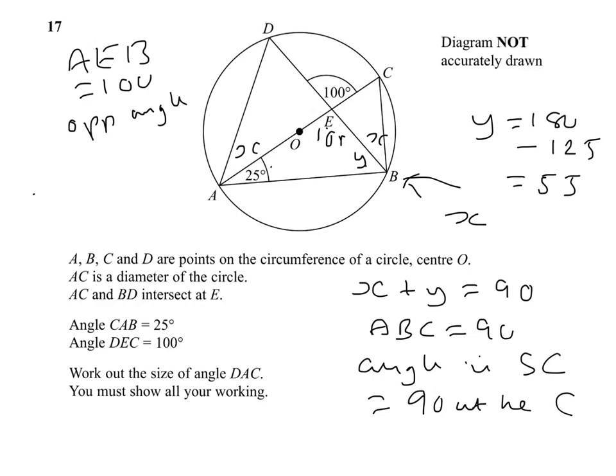So therefore X will equal 35 because we've already established that X plus Y must equal 90 as the angle of the semicircle is 90 at the circumference. So X equals 35 is your answer.